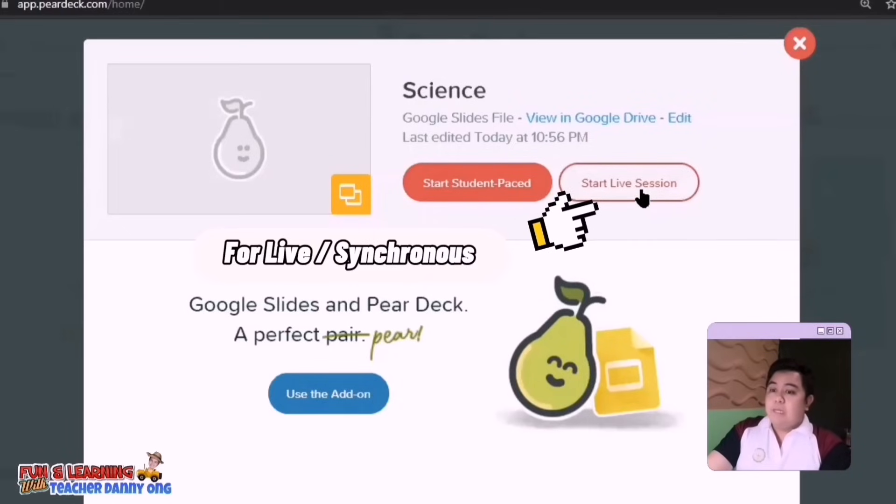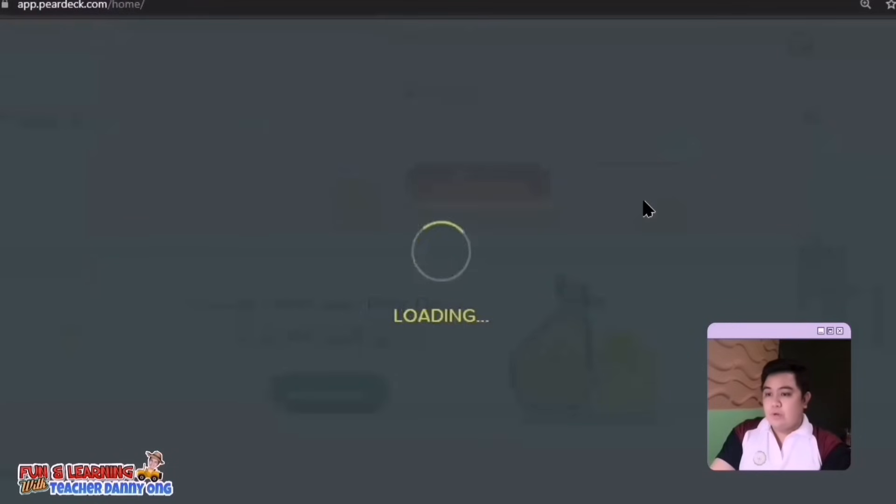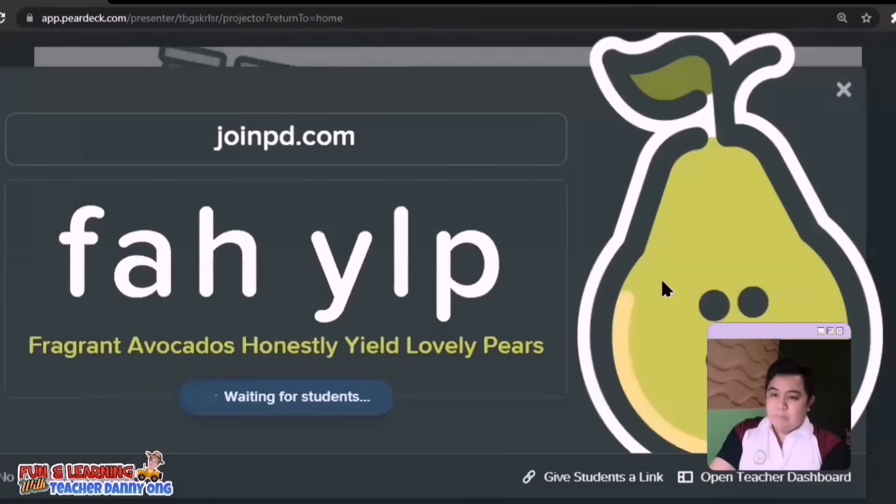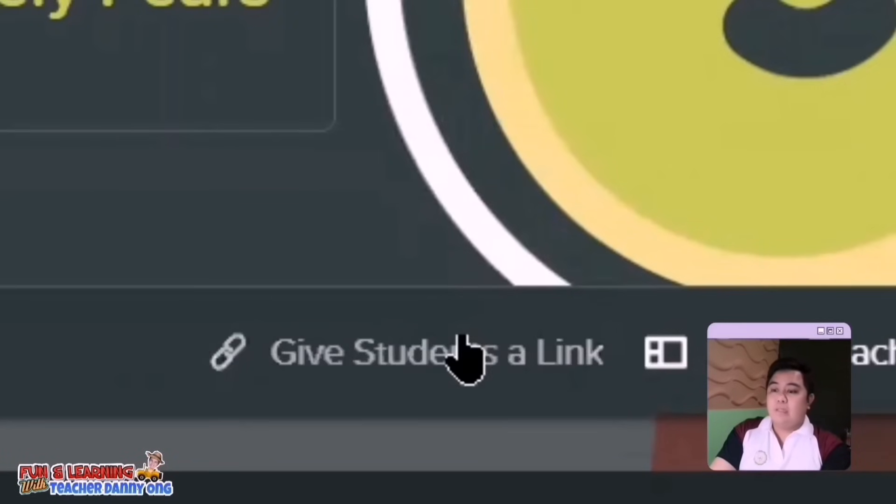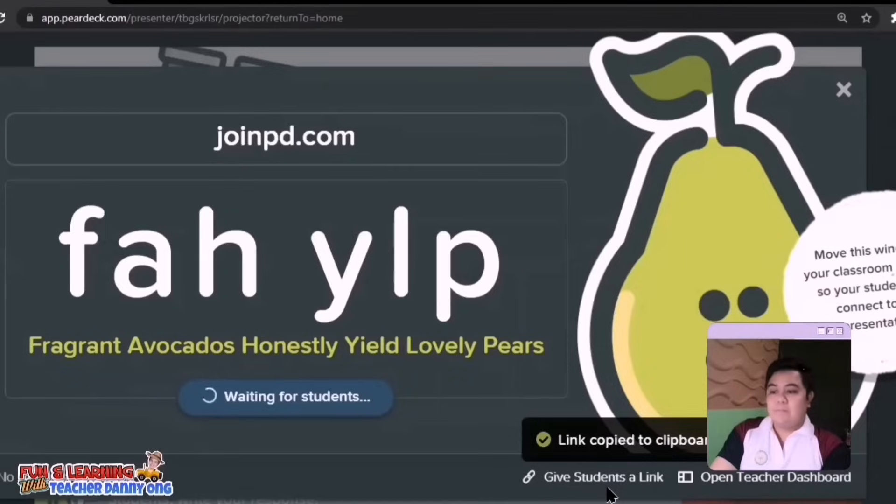Now when you're ready, simply click any of the buttons here on PeerDeck. Let's try to click synchronous or live here. Then a code will appear and simply select give students link and then forward this link to your students. If you would like to do this activity asynchronously, simply click student-paced.